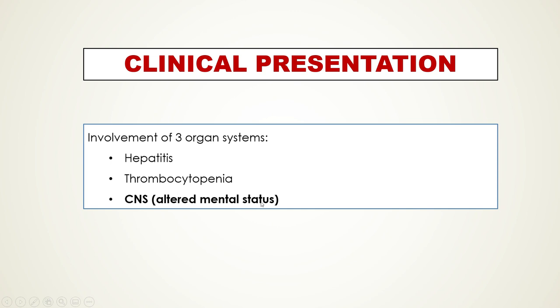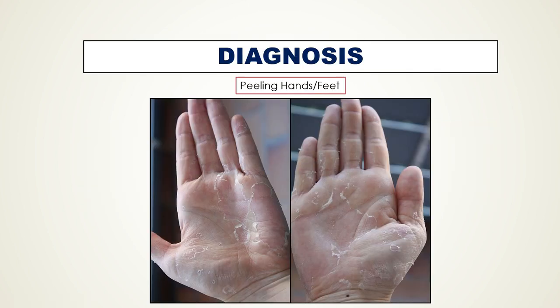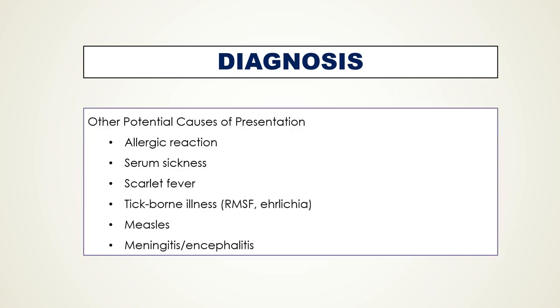One thing found later in toxic shock syndrome that patients should be aware of is peeling of the hands and feet. Sometimes this clinches the diagnosis when we are not really sure earlier.